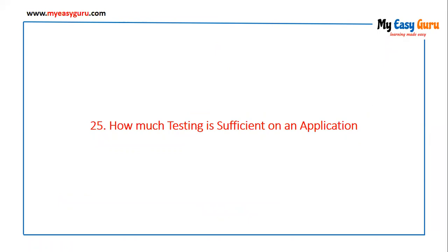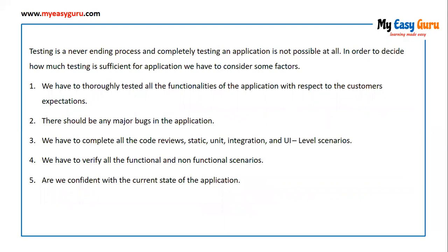How much testing is sufficient on an application? Testing is a never-ending process and completely testing an application is not possible. To decide sufficiency, consider: all functionalities should be thoroughly tested against customer expectations; there should be no major bugs; all code reviews, static, unit, integration, and UI level scenarios should be complete; all functional and non-functional scenarios verified; and the team should be confident with the current state of the application.